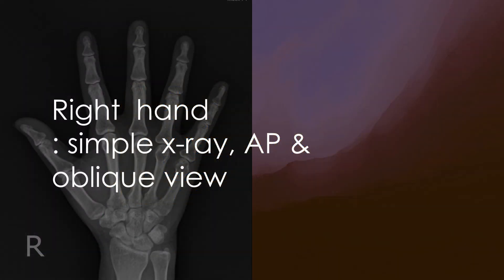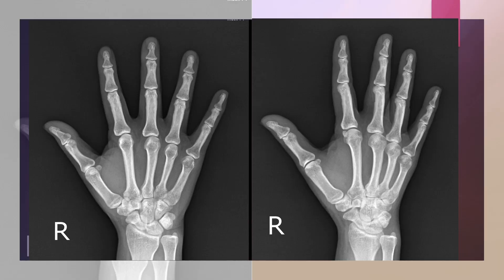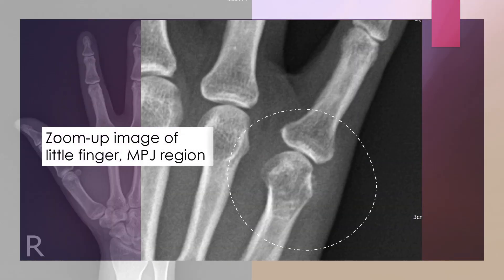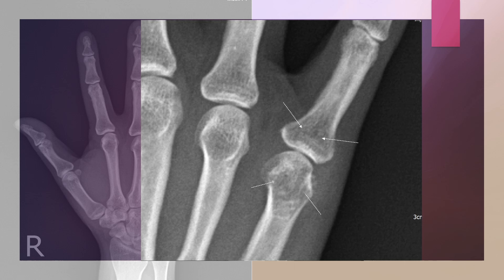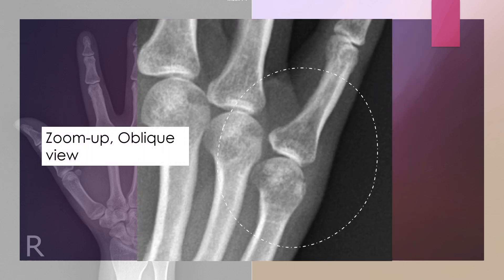Here is a right-hand simple x-ray. Let's take a close look at the little finger. There is localized osteopenia in the periarticular area. It looks like a radiolucent area in the subchondral region. Look at the marginal bone support in the middle base of proximal phalanx and fine calcific densities in the other side of metacarpal head. Compare the radiolucencies with the adjacent subchondral bones in the oblique image.